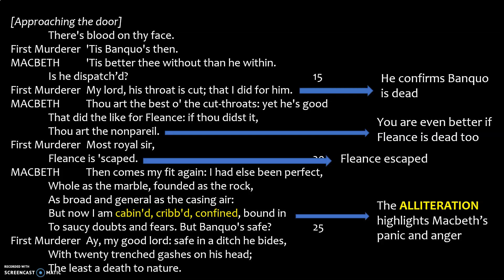Macbeth is happy but says you're the best sort of person if Fleance is dead as well. But then he gets the news: Fleance escaped. He gets really angry, saying 'here comes my fit again' — his anger returns. He goes on: 'but I am now cabined, cribbed, confined.' You've got these really hard sounds in the alliteration of that C sound — cabined, cribbed, confined — all meaning to be trapped, trapped into doubts and fears. So now he can't be happy because Fleance has escaped.